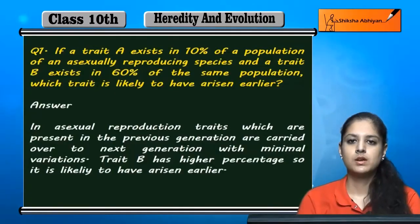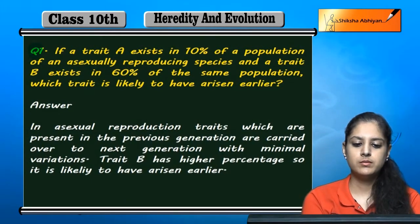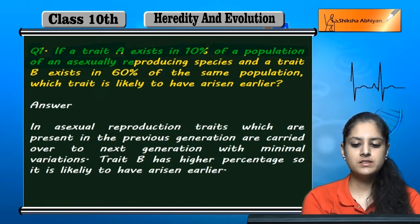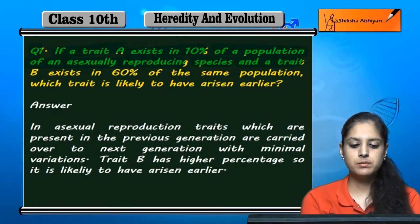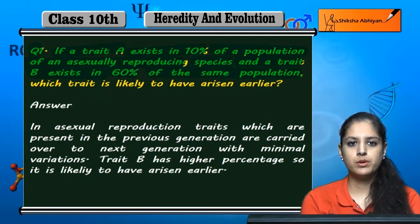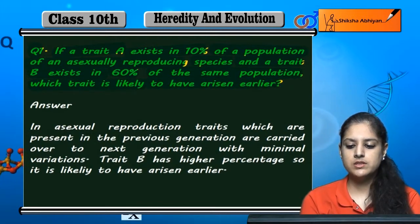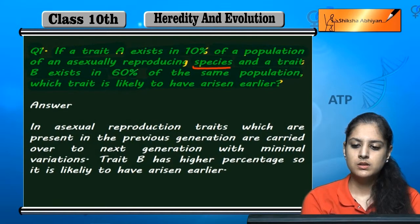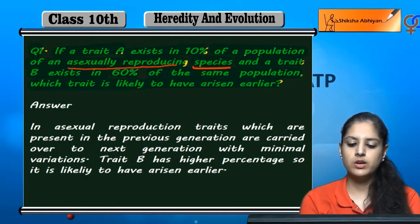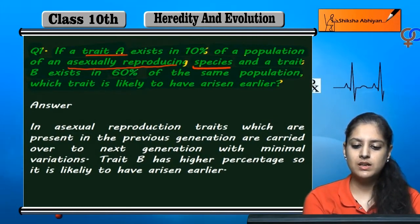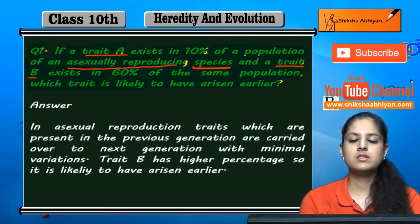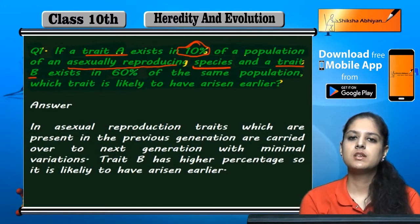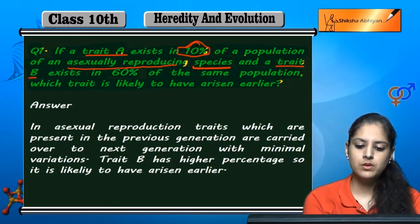Question 1: If a trait A exists in 10% of a population of an asexually reproducing species, and a trait B exists in 60% of the same population, which trait is likely to have arisen earlier? There are two traits: trait A and trait B. Trait A exists in 10% of the population, while trait B exists in 60%.